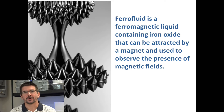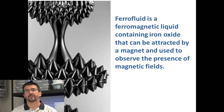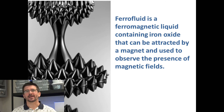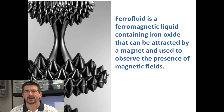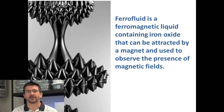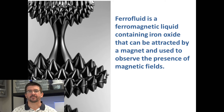Another interesting way that we can detect magnetic fields is by using a ferromagnetic liquid called ferrofluid. Ferrofluid is really interesting — we'll also be looking at it here in a few days. Ferrofluid contains iron oxide, which contains iron, which is a ferromagnetic material, so this is actually a liquid that will be attracted to a magnet. By using ferrofluid, we're able to see some pretty neat shapes and patterns of magnetic fields in different types of magnets.